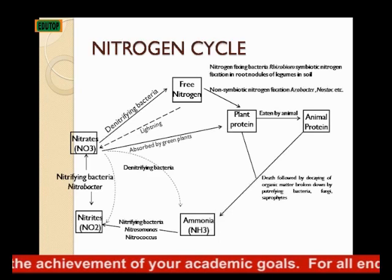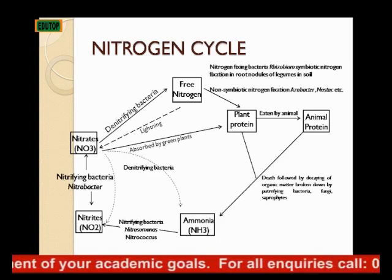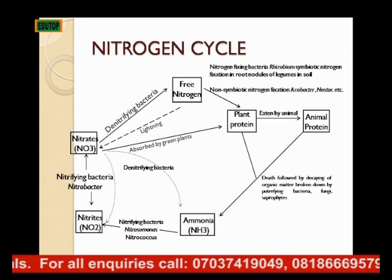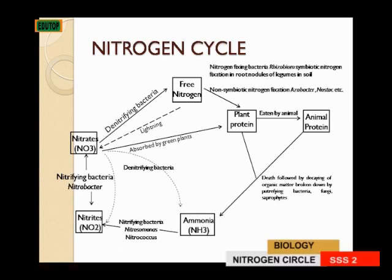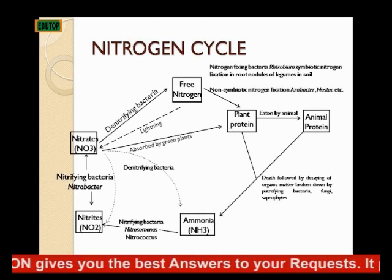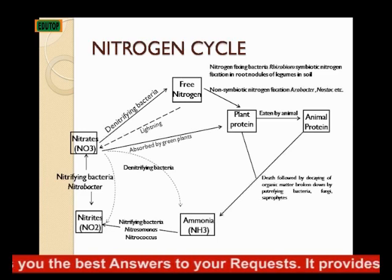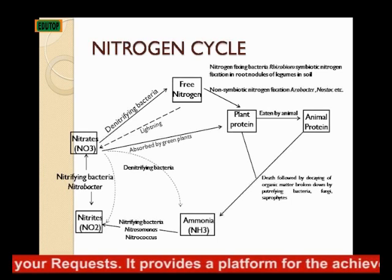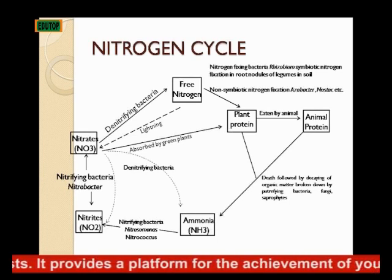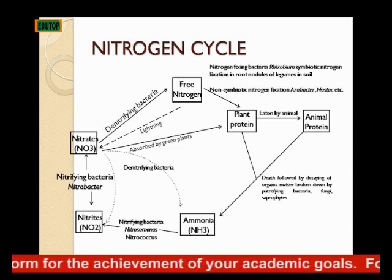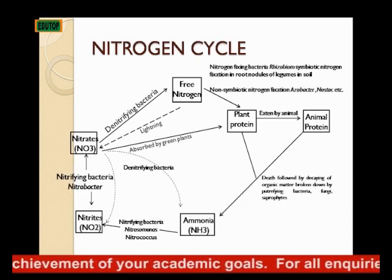This is the nitrogen cycle diagram. You have free nitrogen in the air; the plant protein absorbs it, then animals eat it, giving us animal protein. When they die, you have ammonia, NH3. Then through the action of nitrifying bacteria — Nitrosomonas and Nitrococcus — you have nitrites. Then another nitrifying bacteria converts these to nitrates. Denitrifying bacteria return nitrogen to free nitrogen. You also have lightning occurring, absorption by green plants, and denitrifying bacteria completing the cycle.